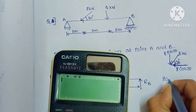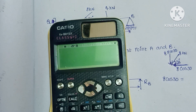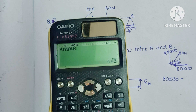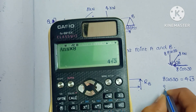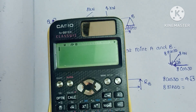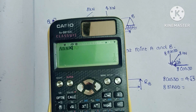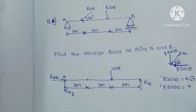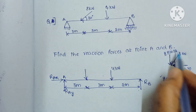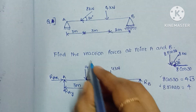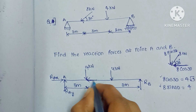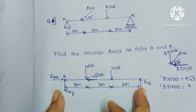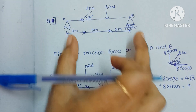Calculating the components: 8·cos30 = 8·(√3/2) = 4√3 kilonewtons, and 8·sin30 = 8·(1/2) = 4 kilonewtons. So the x-component of the inclined force is 4√3 kN and the y-component is 4 kN. Now we have all the applied forces and reaction forces identified on the free body diagram.